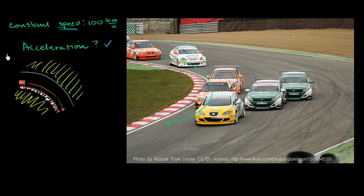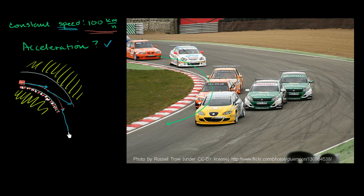If you think about its velocity, the magnitude of its velocity is constant — it is 100 kilometers per hour. But what is happening to the direction of the velocity? Remember, velocity is a vector quantity; it has magnitude and direction. Up here, as it's starting to enter the curve, it's going in this direction. You tend to show vectors by arrows, with the arrow going in the direction of the velocity. Normally, the length of the arrow shows the magnitude of the velocity. So its velocity is constant, so the length of this arrow will always be constant. But as we see, its direction changes — when it's halfway through the turn, it is now going in a different direction.